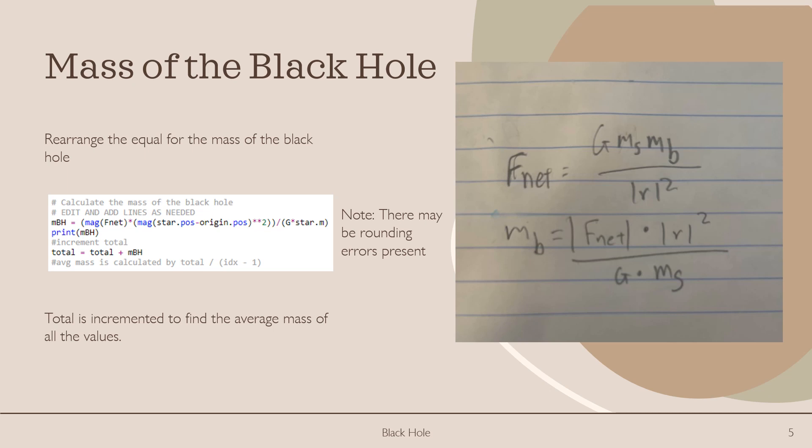Alright, so now we can find the mass of the black hole. And to do this, we're going to rearrange the gravitational formula. And instead of solving for net force, we're going to solve for the mass of the black hole. After we do this, we're also going to create a total, which will keep summing up the black hole. That way we can find its average at the end of the while loop. This step undergoes a lot of calculations, so there may be rounding errors present.